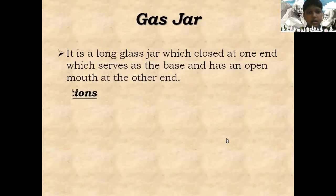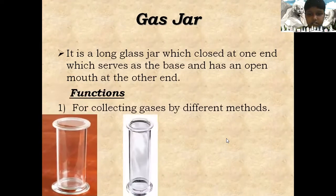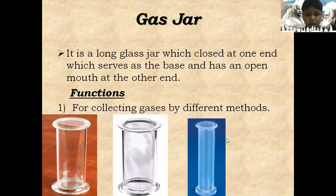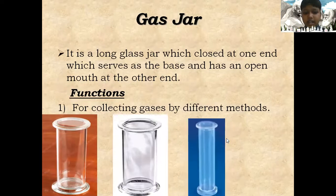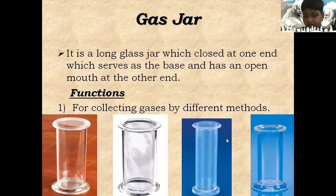Gas jar: A long glass jar which is closed at one end serving as the base and has an open mouth at the other end. Functions: For collecting gases by different methods like downward displacement of water, downward displacement of air, and upward displacement of air.